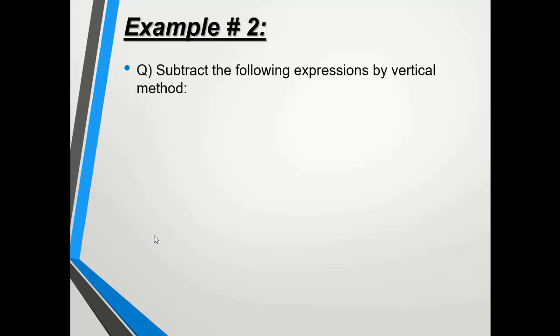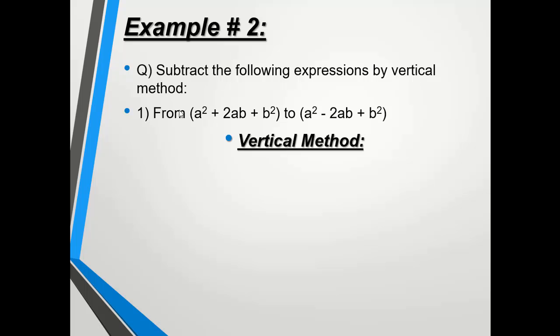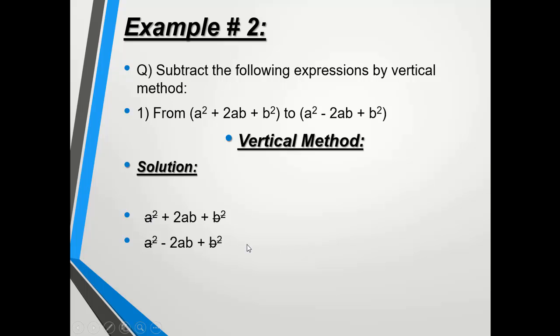Example number two: subtract the same expressions by vertical method. Vertical method means solving the expressions in two different rows. We write the first expression on top and the second expression below it.